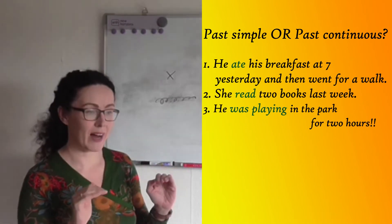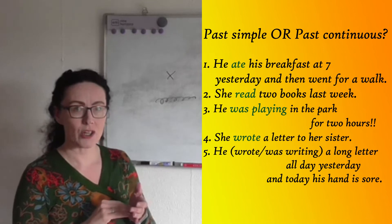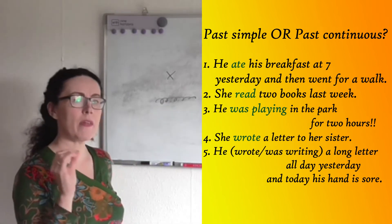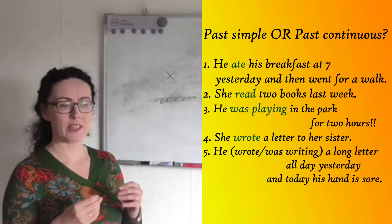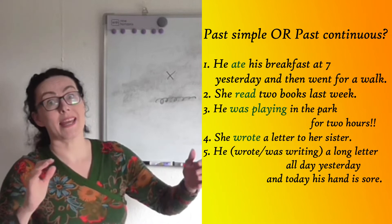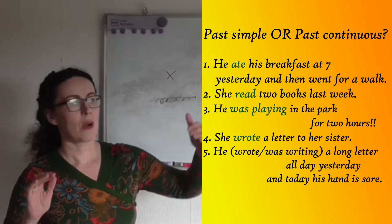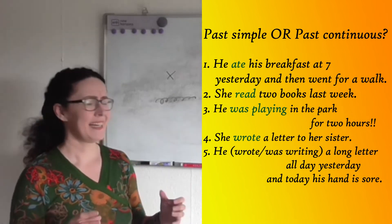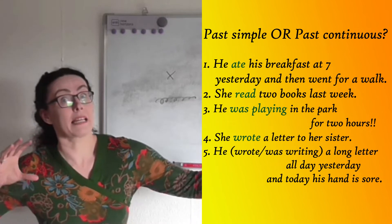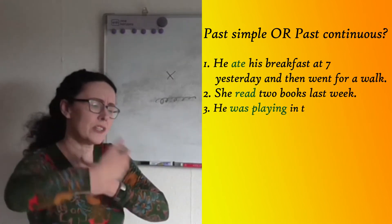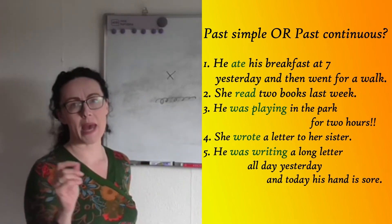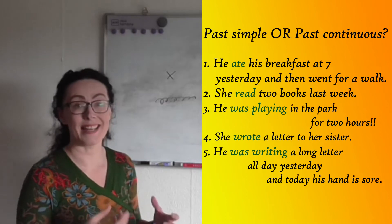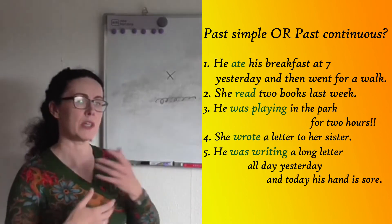Sentence five is a little different: 'He wrote/was writing a long letter all day yesterday and today his hand is sore.' We've got 'a long letter' and 'all day yesterday,' which implies ongoing activity — and today his hand is sore because of it. That really emphasizes duration and effort. The best option here is the past continuous: 'He was writing a long letter all day yesterday and today his hand is sore' — emphasizing duration and something ongoing.